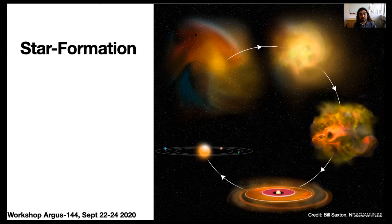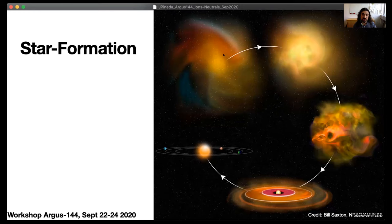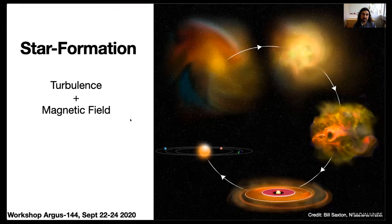At some point, these dense cores will undergo gravitational collapse, and at the end, we hope to form a star and a protoplanetary disk, which will then be the initial conditions for the planetary systems. So if we want to understand the star formation process, some of the key properties that we need to understand are the turbulence and the magnetic field.